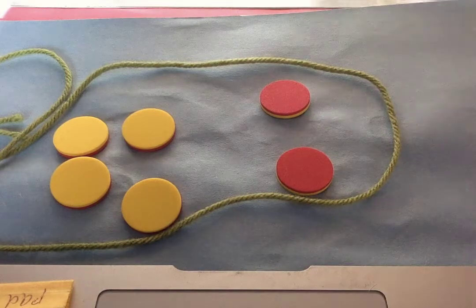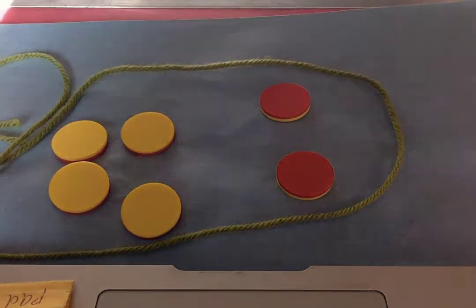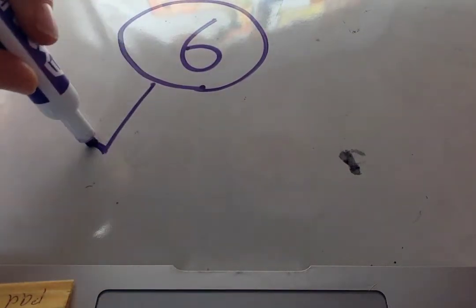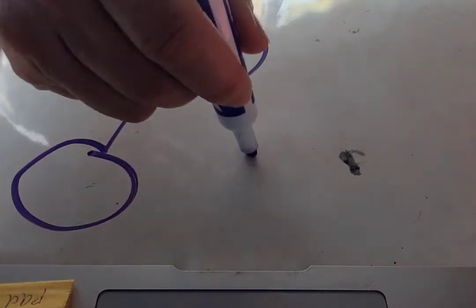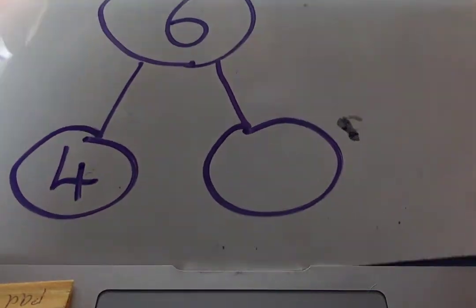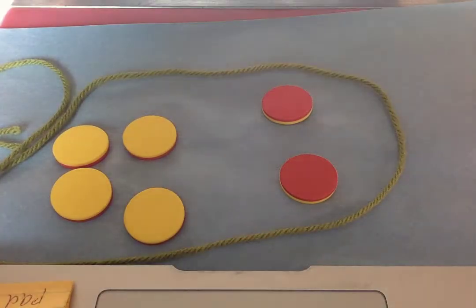I have six, but I have two groups. And I want to show you how to do that with a number bond. I had six, and then I had two groups. What were my two groups? Do you remember?